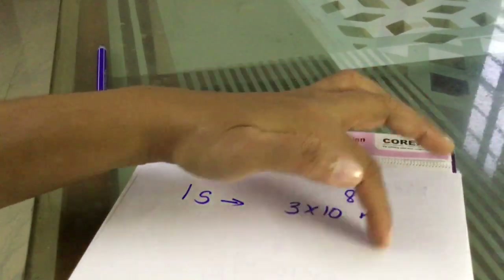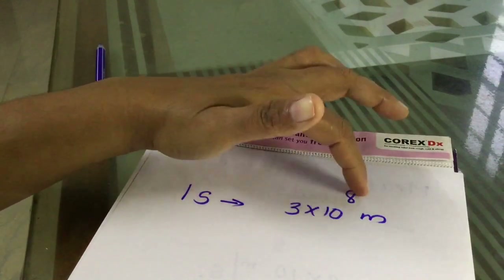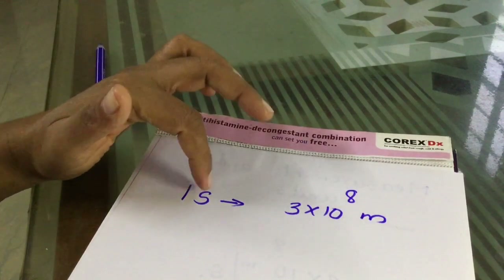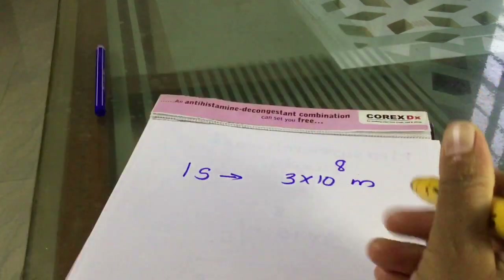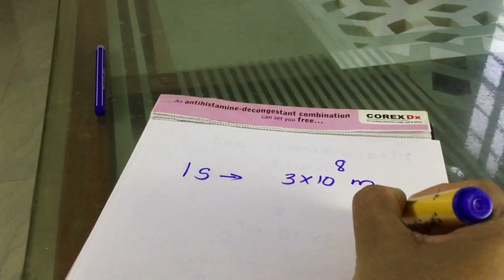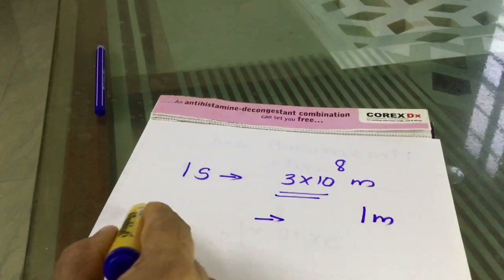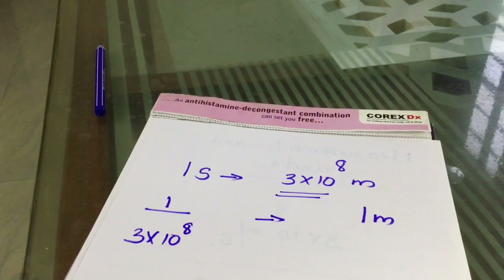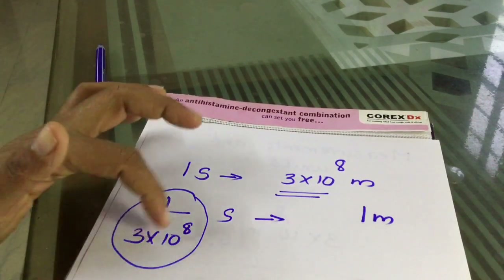The speed of light is 3 × 10⁸ meters per second. Therefore, 1 meter is the distance traveled by light in 1/3 × 10⁻⁸ seconds.